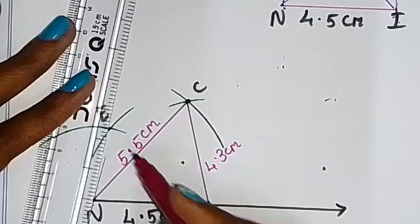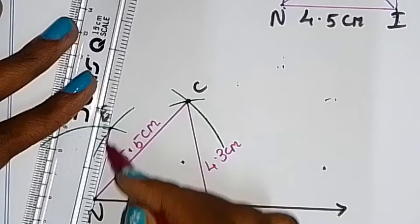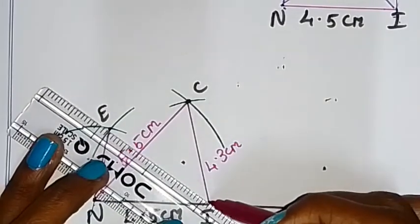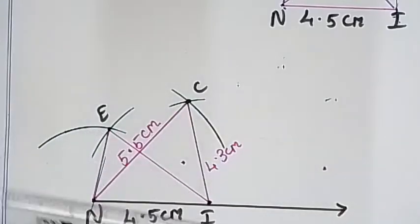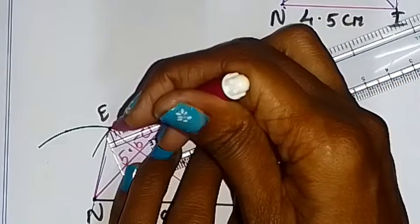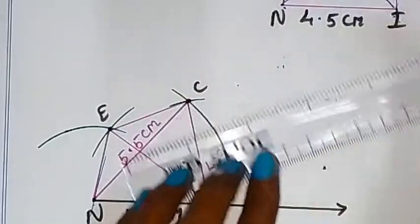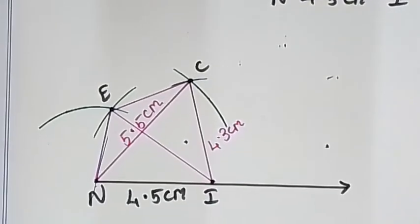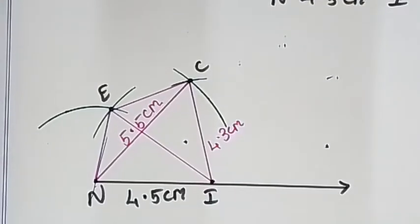To find the area, we need to measure the heights from the diagonal. We'll use the diagonal and measure perpendicular heights.